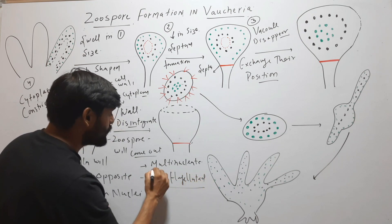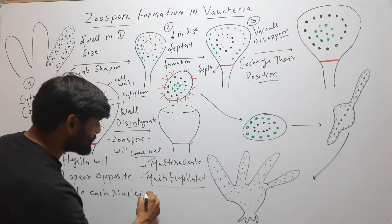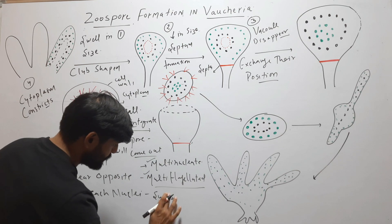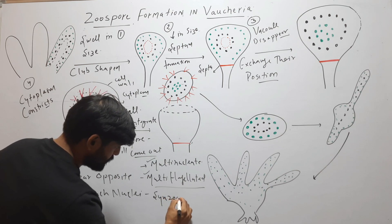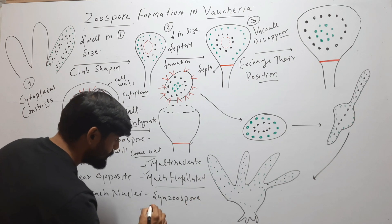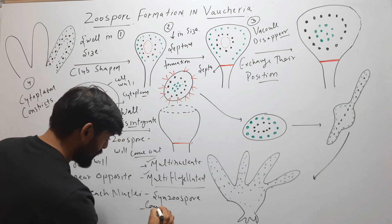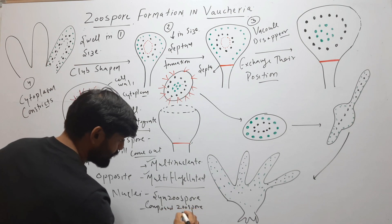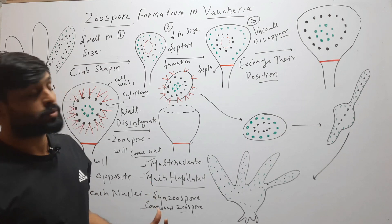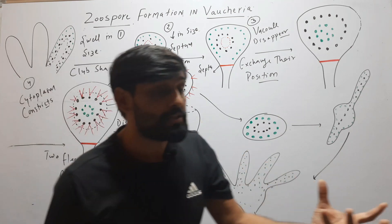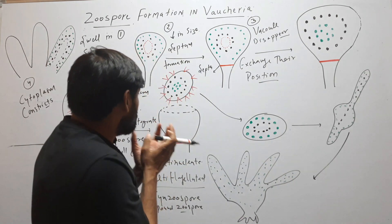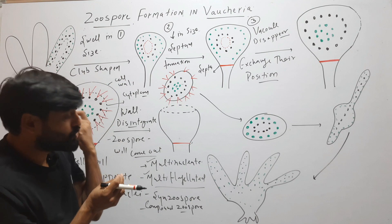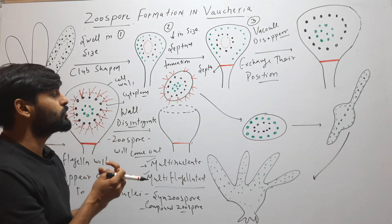The zoospore which is multi-nucleate and multi-flagellated is called a synzoospore, also called a compound zoospore. So this zoospore is multi-nucleated and multi-flagellated, and is referred to as a synzoospore or compound zoospore.